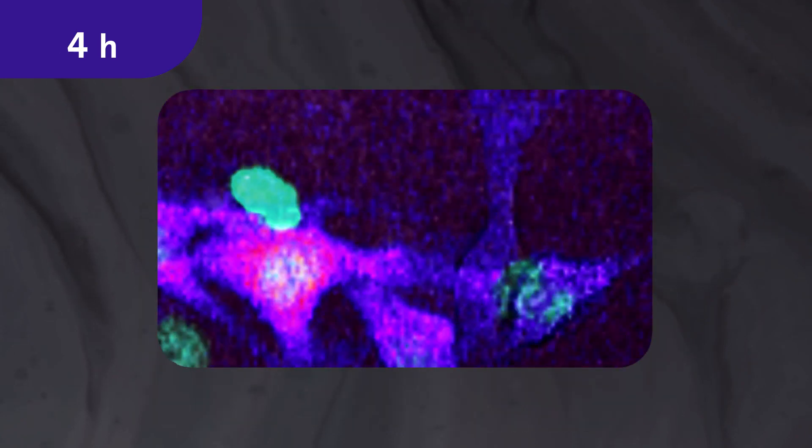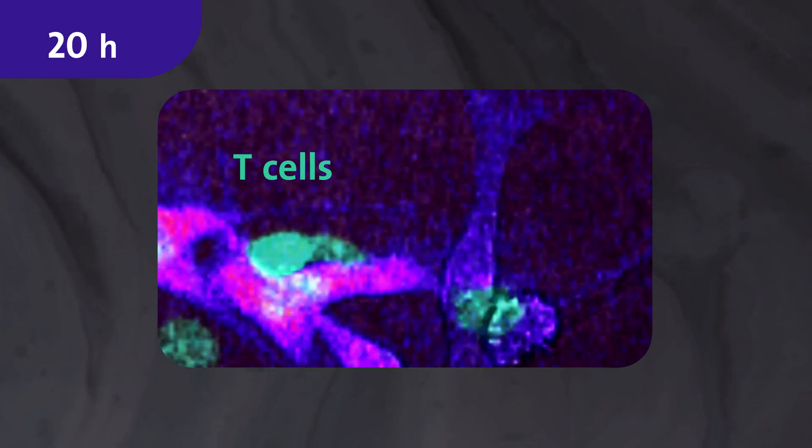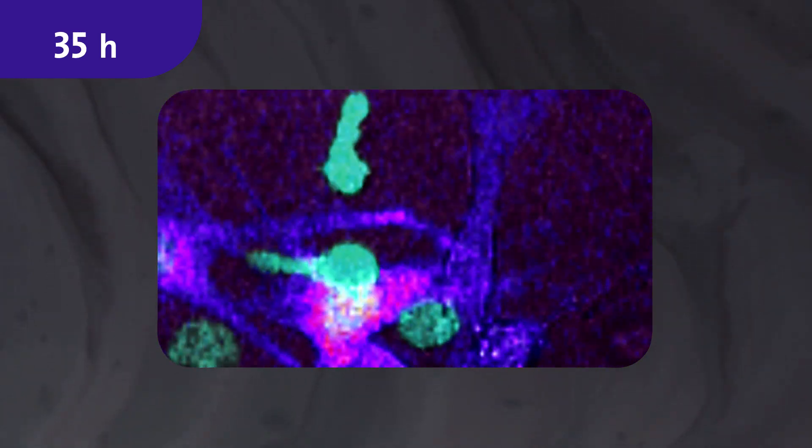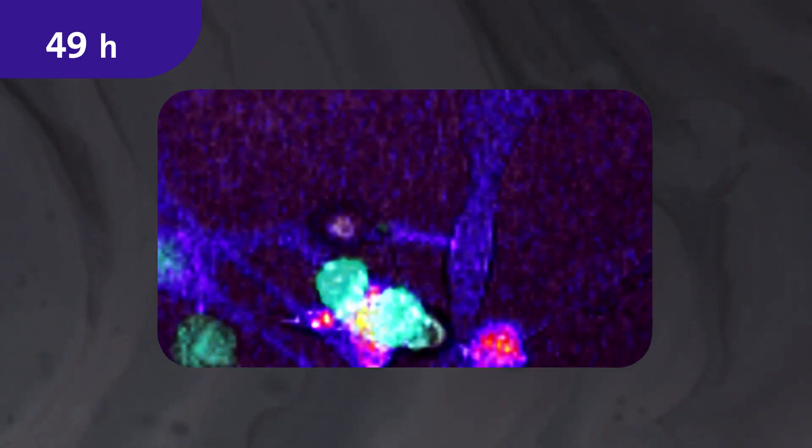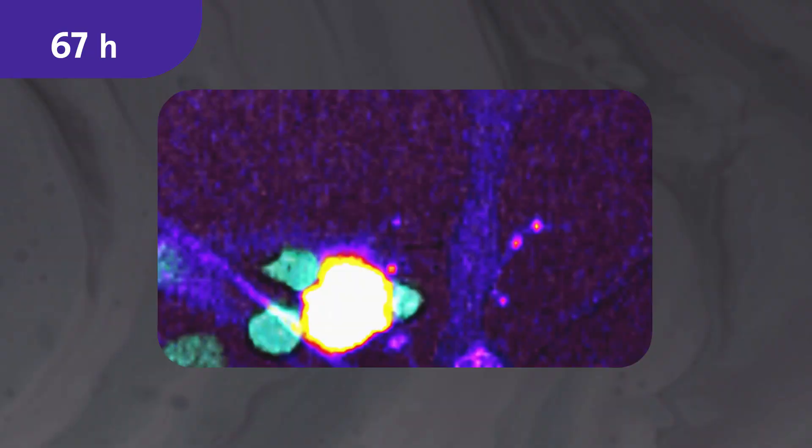Using time-lapse microscopy, we can see that T cells can hit tumor cells with several attack impulses during contact. Each impulse, akin to an injury, leads to varying degrees of calcium influx, visible in the video as a bright phase in the tumor cell. Here, the tumor cell collapses after the third impulse and disintegrates.